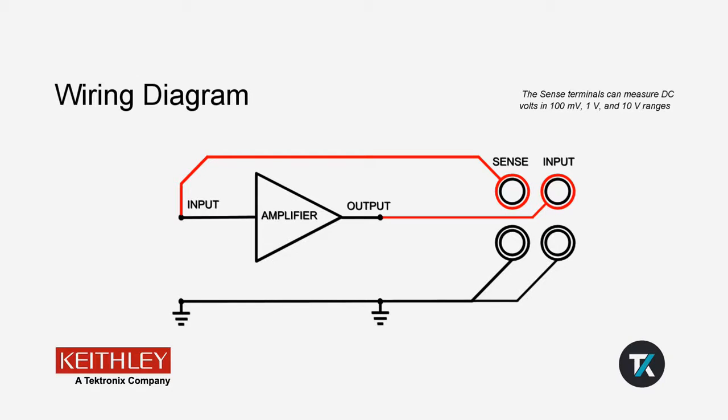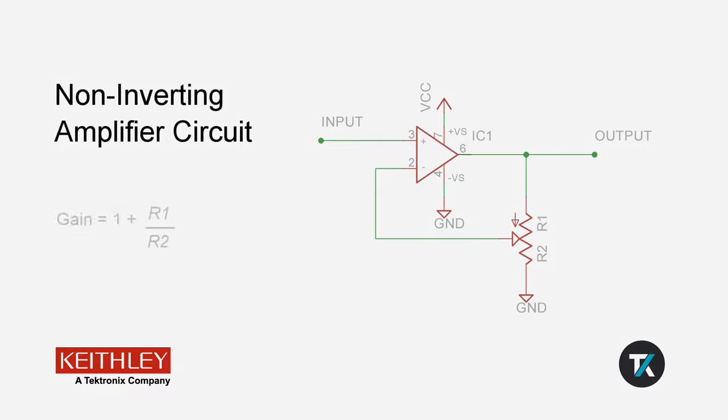To show this, I will measure the gain on a simple non-inverting amplifier circuit. In this circuit, the gain is determined by the equation: gain equals one plus the quantity R1 over R2. R1 and R2 are determined by the turning of a potentiometer. This gives us an adjustable gain that we will be able to measure using the ratio function.